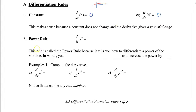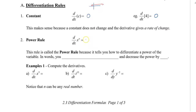The second rule is called the power rule. The power rule states that if we have x to the power of n, we're going to take that exponent n, move it to the front, and multiply that by x to the power of n minus 1. So instead of n, we're going to take one less than what the exponent was before for our new exponent. This rule is called the power rule because it tells you how to differentiate a power of the variable. In words, you're going to bring down the power and then decrease the power by 1.